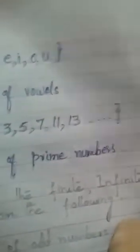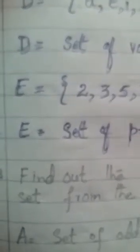E = {2, 3, 5, 7, 11, 13}. Answer: E is a set of prime numbers.